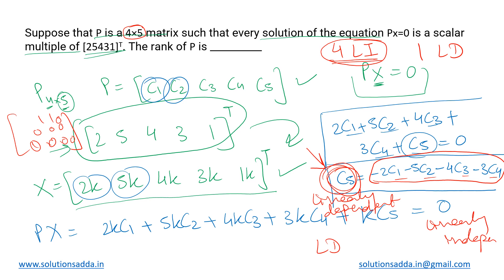In this case, we have four such column vectors. So the rank of P is the same as the number of linearly independent column vectors, which is 4. Therefore, the answer for this question is 4.